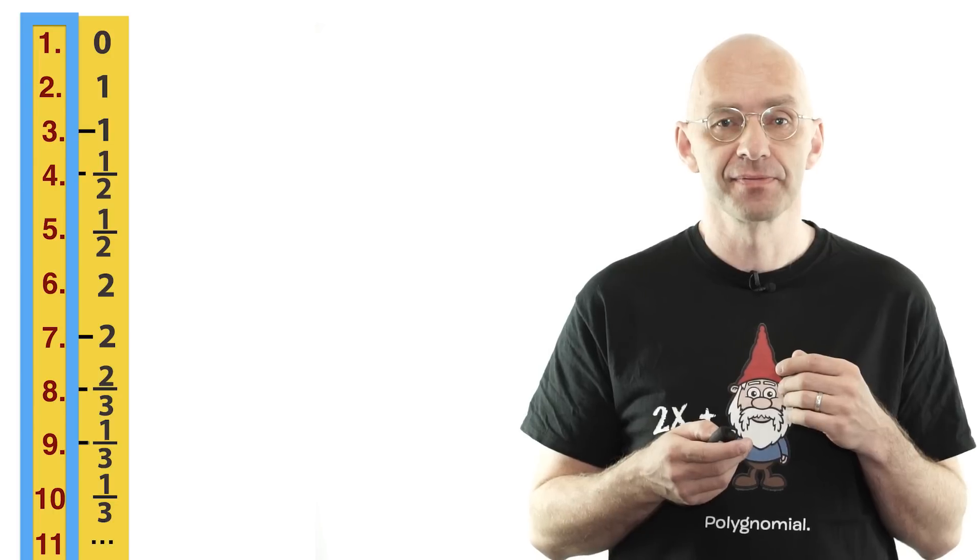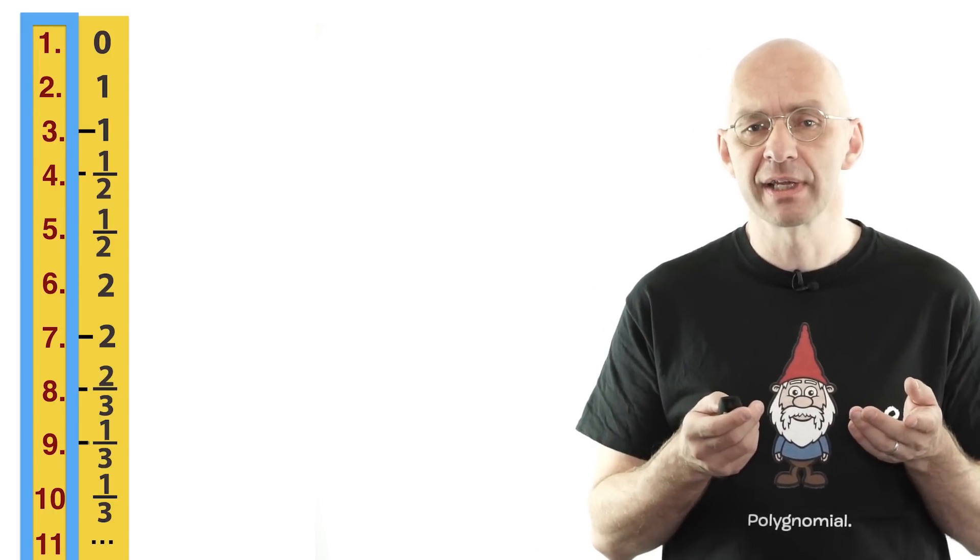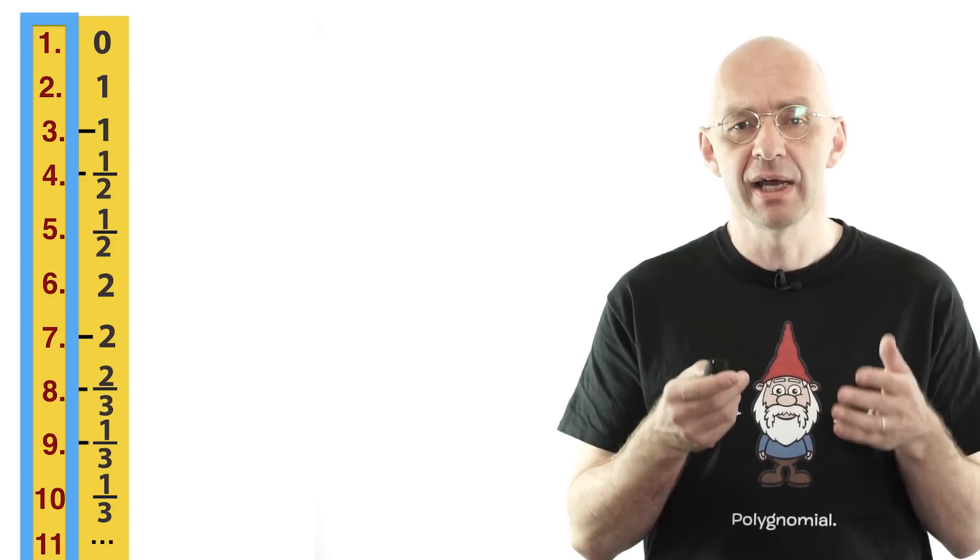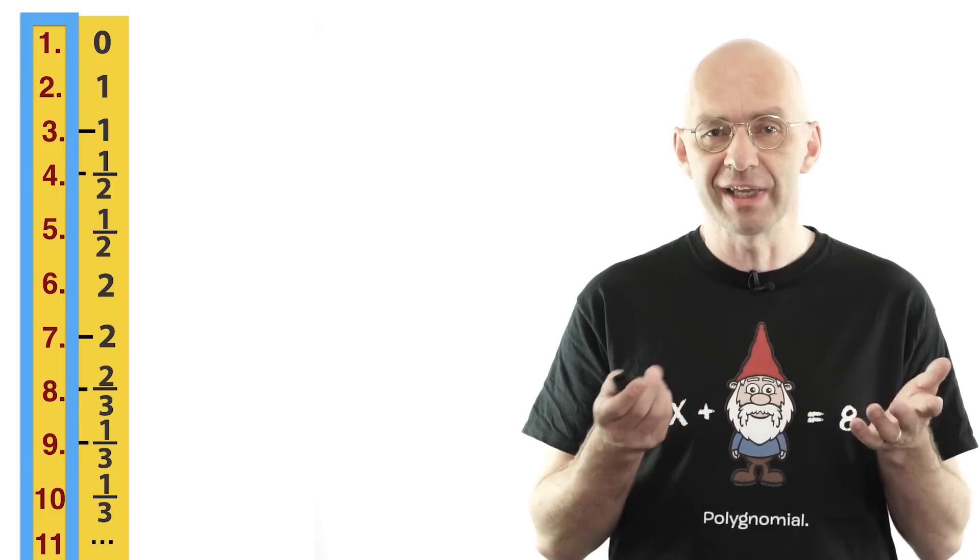This also shows that in a sense there are exactly as many natural numbers as there are elements in any countably infinite set. Just think about this for a moment. A listing like this shows that there are as many rational numbers as natural numbers. Now if you see this for the first time, don't you think that this is really amazing?